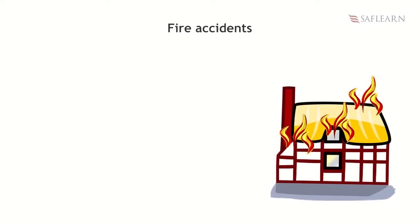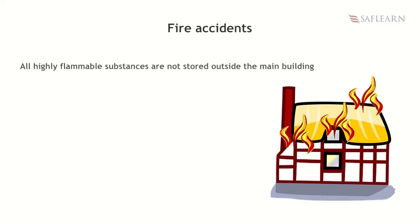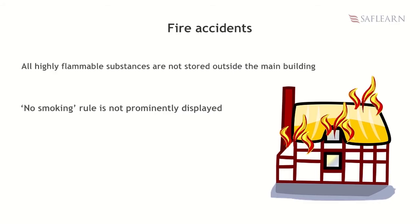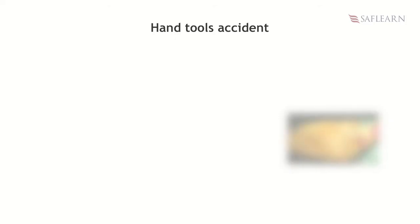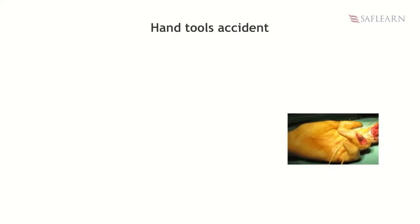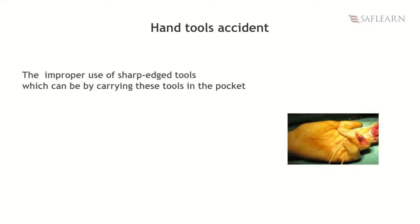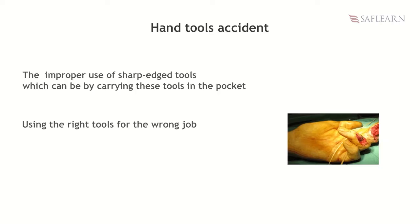Fire accidents may also happen because highly flammable substances are stored in the main building and no smoking rules are not prominently displayed. Accidents caused by hand tools usually happen due to the improper use of sharp edge tools, which can be by carrying these tools in the pocket or using the right tools for the wrong job.